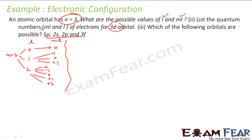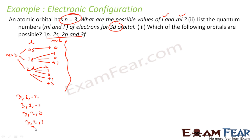The second question asks to list the quantum numbers ML and L for electrons in 3D orbitals. D corresponds to L equal to 2. So the quantum numbers are: (3, 2, −2), (3, 2, −1), (3, 2, 0), (3, 2, +1), and (3, 2, +2), where the first number is n, second is L, and third is ML.